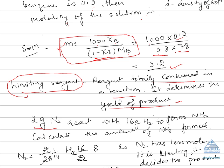For example, if we have 2g N2 react with 16g H2 to form ammonia, and we want to calculate the amount of ammonia formed, first we have to find out which one is our limiting reagent. The limiting reagent is determined by the one which is in limiting amount or less amount.